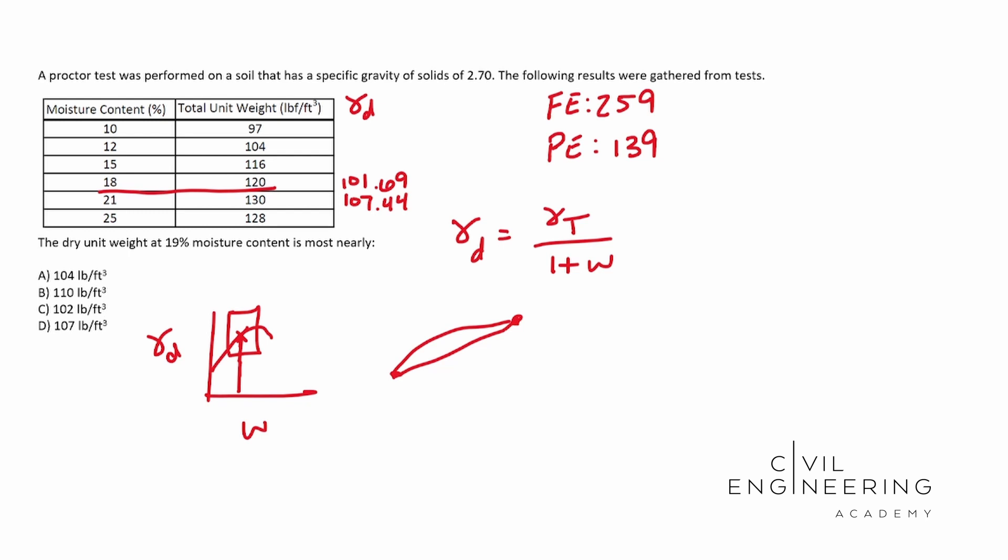And all we did was we assumed a linear relationship. So this is 18.18 with our dry density of 101.69. Up here, we have 21 as our moisture, 107.44 as our dry density.